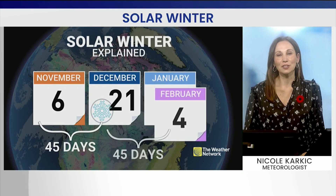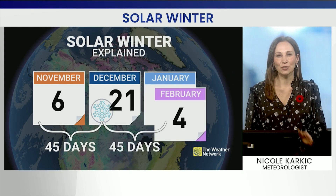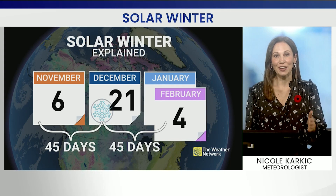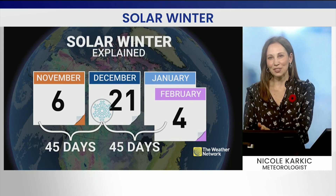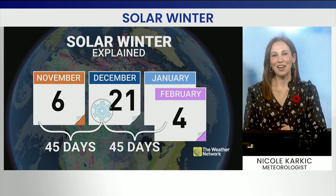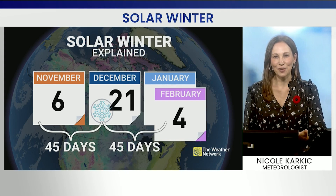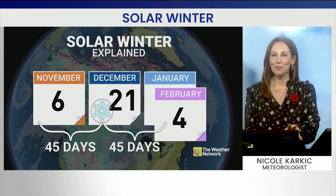How do we get this date? We go to the winter solstice — it starts on December 21st this year. Bump back 45 days and you get November 6th, so it's already started. Move ahead to the winter solstice again, and then 45 days after that is when it ends. That takes us to February 4th. It's a little confusing, but we've done the math for you.